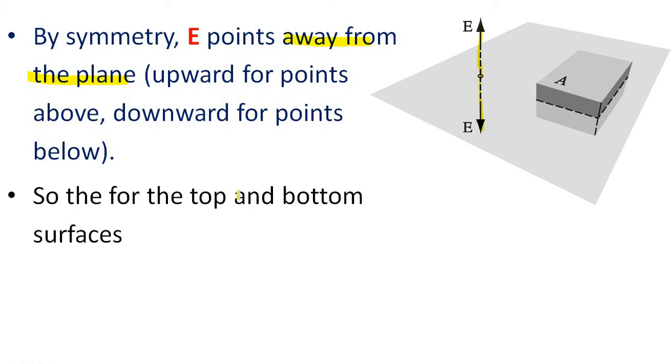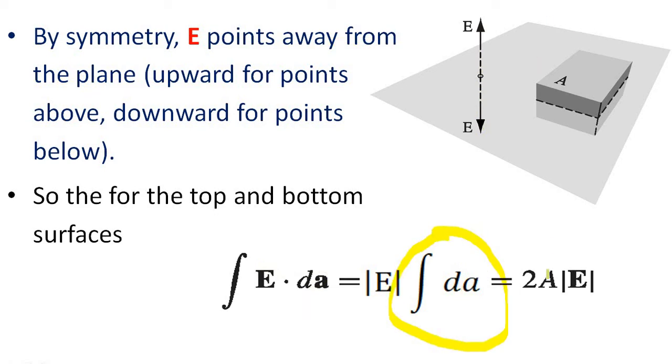So for the bottom and top surfaces we can write integral E dot dA equal to E dA cos theta. As theta equal to 0, cos 0 is equal to 1, we can take E out. We know that integral dA is equal to A. For upper surface there is one A and for lower surface there is another A. So total equal to 2A. So the equation for upper and lower surface will be equal to 2A into E.